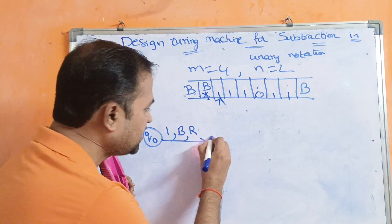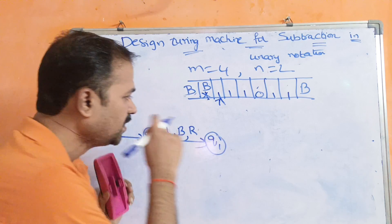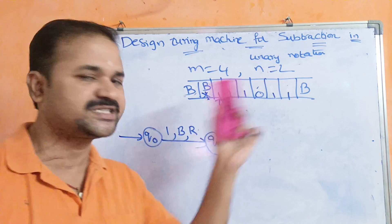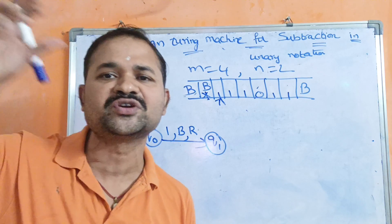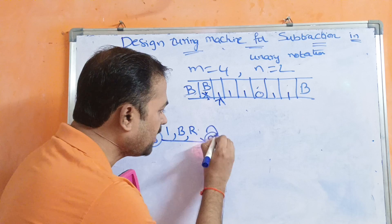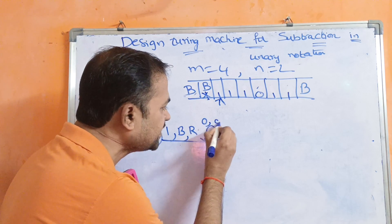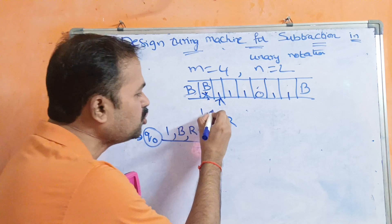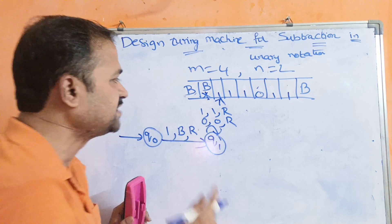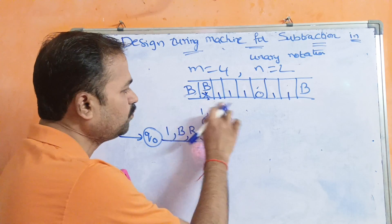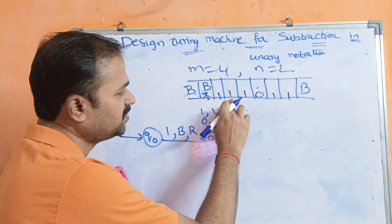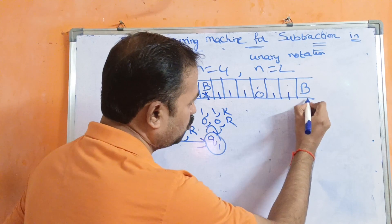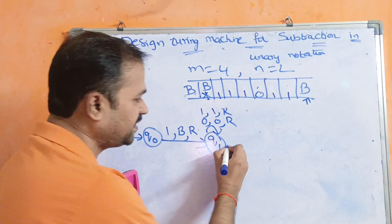On q1, if we read zero, don't change it but move the head right; if we read one, don't change it but move the head right. We continue moving right through the tape — one, one, zero, one, one — until we reach the blank symbol at the end of the string.